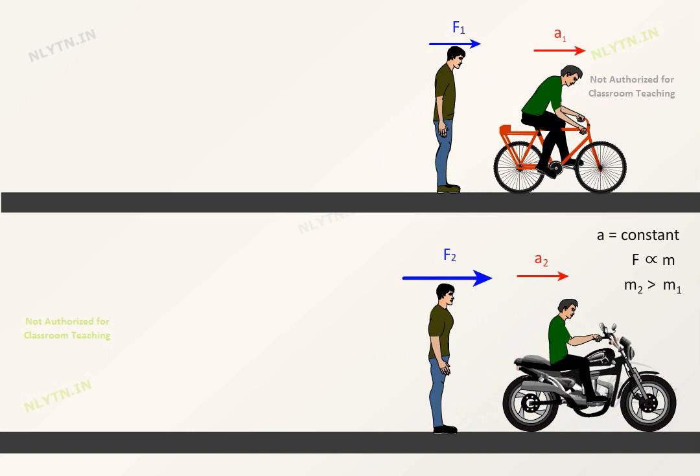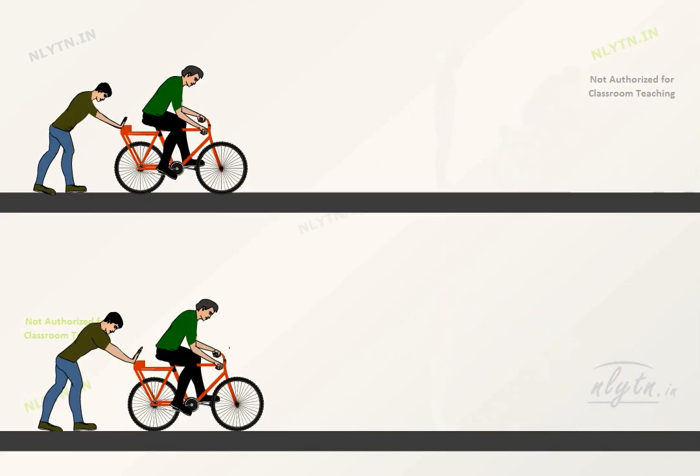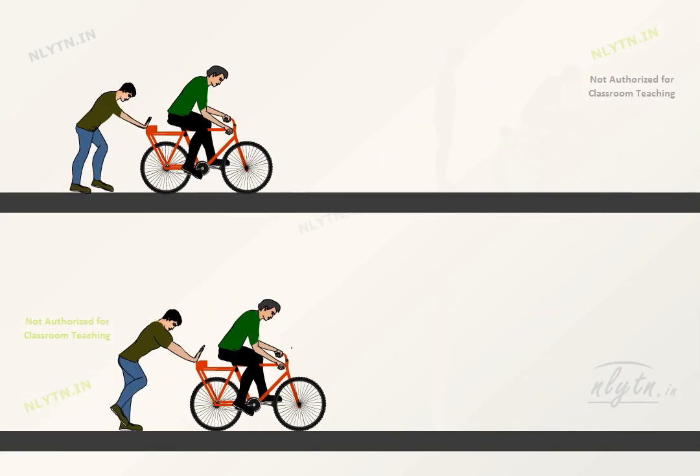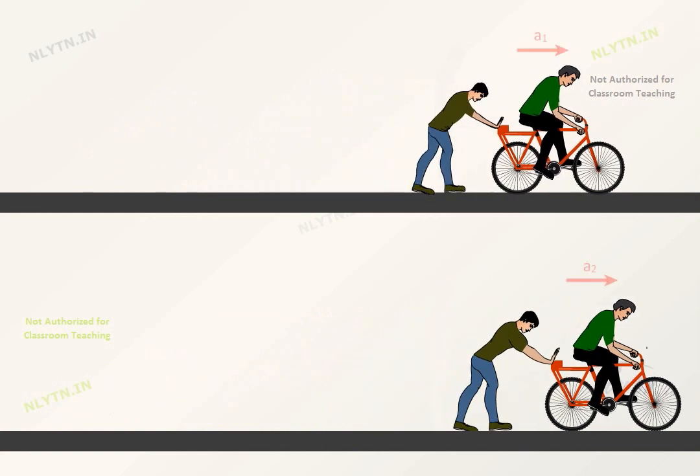Now if these people were pushing objects of the same size, then the stronger person will cause it to speed up faster than the other one. So we can say that if mass of the objects is constant, then the force is directly proportional to the acceleration of the object.